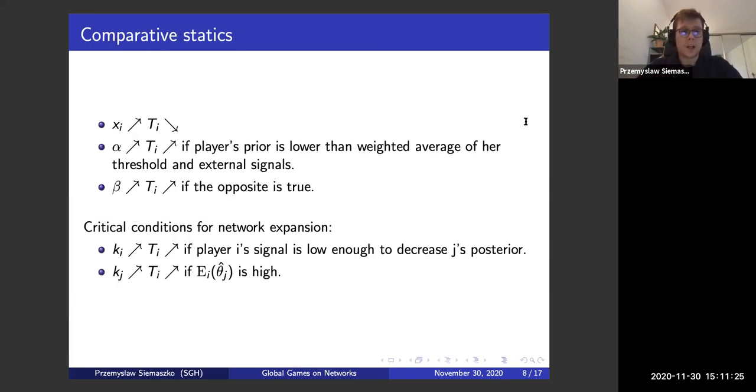And some comparative statics. Obviously, if we see that our private signal is higher, which means we perceive the state of the world as less favorable to the risky action, our threshold goes down. So we will be generally less likely to participate. Alpha and beta influence our thresholds in a way dependent on our prior and private signals. So if we think that our prior was more favorable towards taking a risky action, higher alpha will increase our threshold.